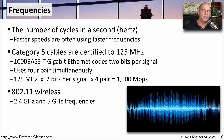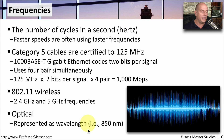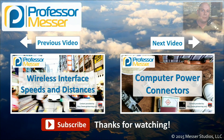On wireless networks like 802.11, we might be running at 2.4 gigahertz or 5 gigahertz frequencies — another example of how we use frequencies to determine how much information we're sending over a medium. If we're talking about optical fiber connections, then we're talking about the wavelength, which is a way to describe the frequencies. So it's not uncommon, for example, to see optical networks running at a frequency of 850 nanometers.